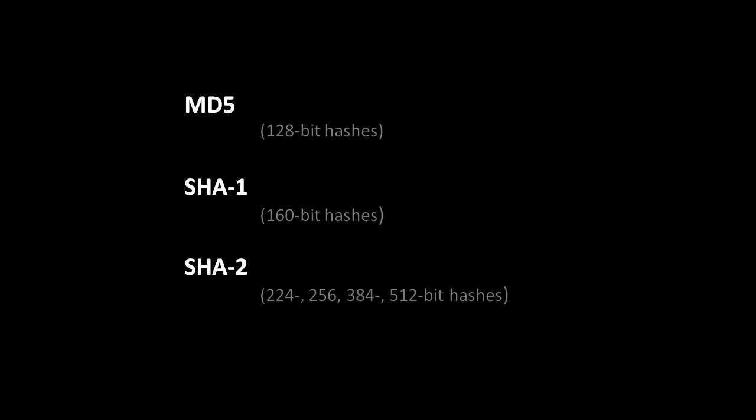Whether it makes a difference in practice probably depends on what you're doing. For most purposes, 256 bits is probably perfectly adequate. Of these three — MD5, SHA-1, and SHA-2 — SHA-2 is the safe choice. It's the most recent standard. MD5 has been shown to have weak collision resistance, which doesn't matter in all applications, but in some applications that's important, so keep that in mind before using MD5.